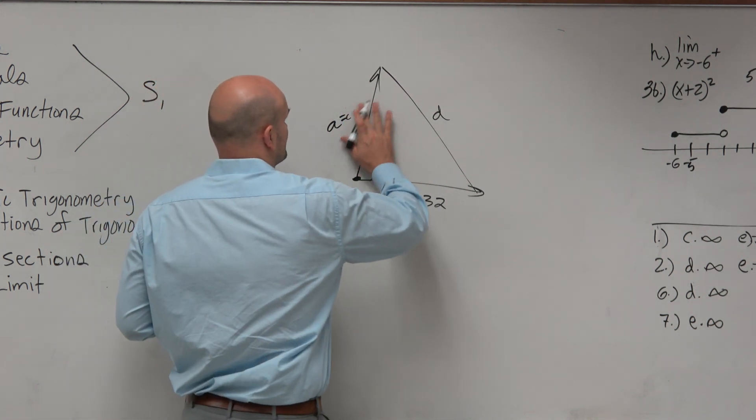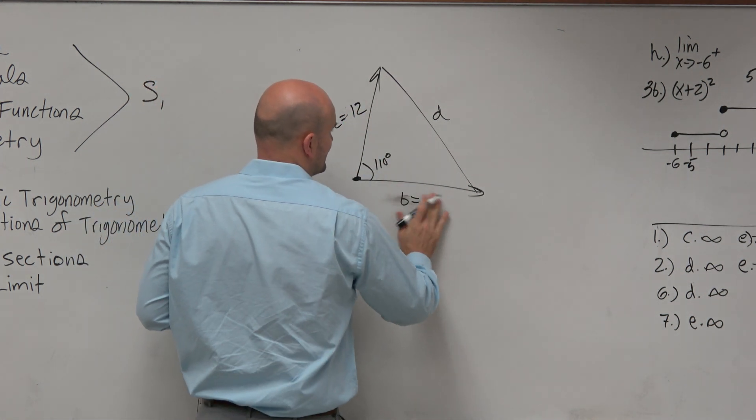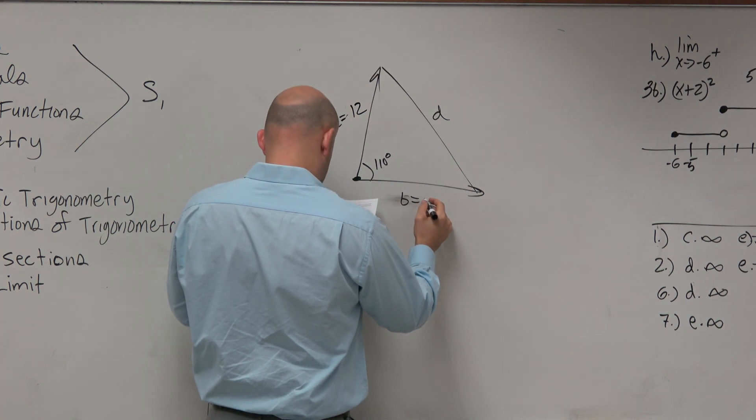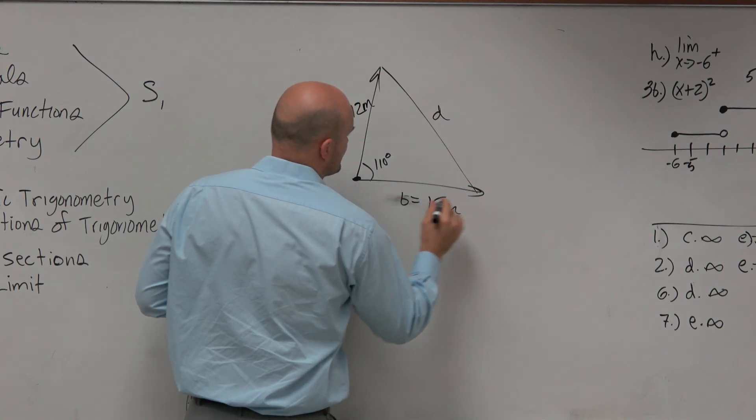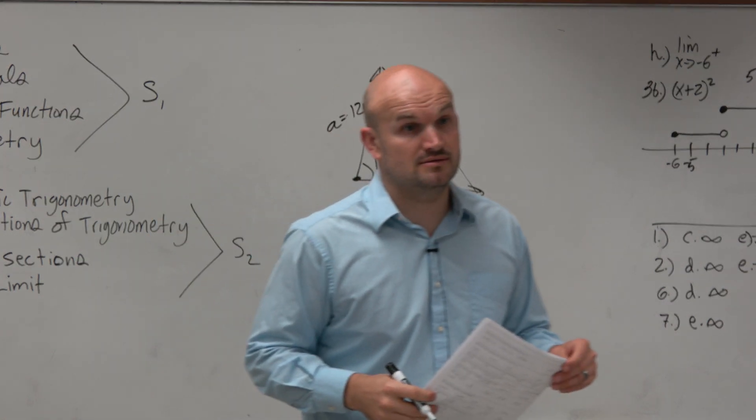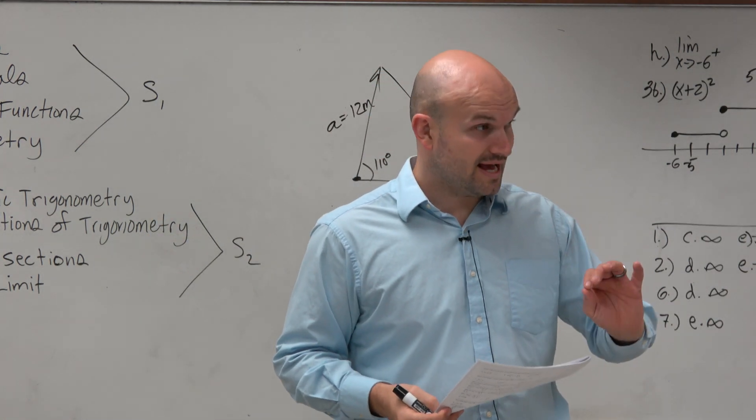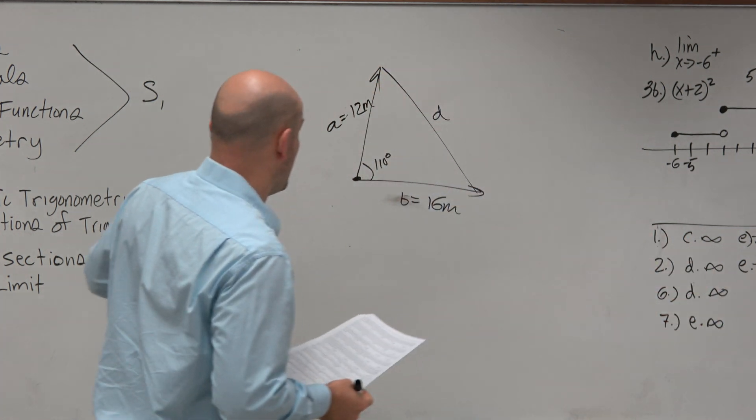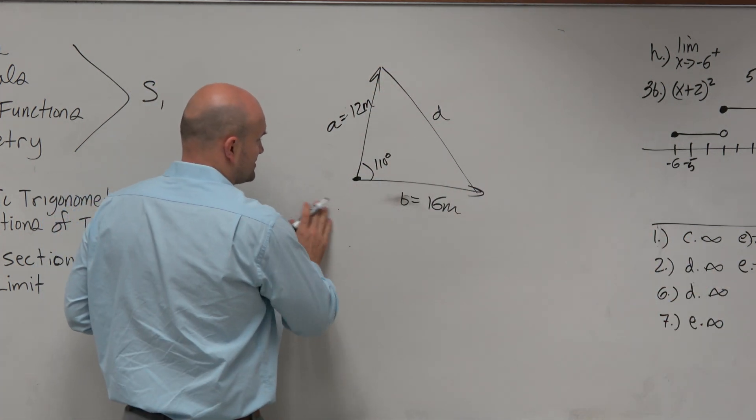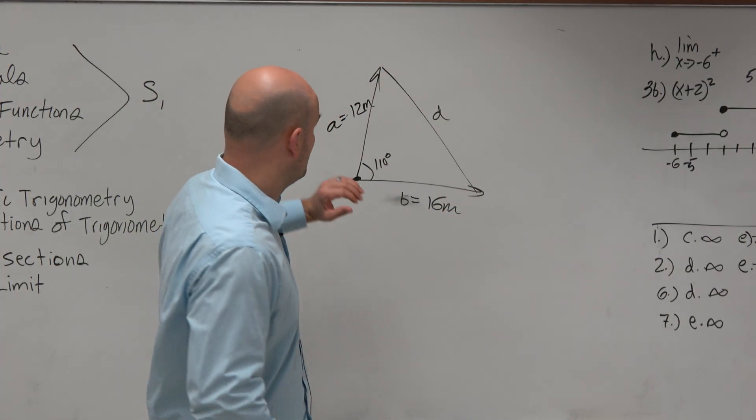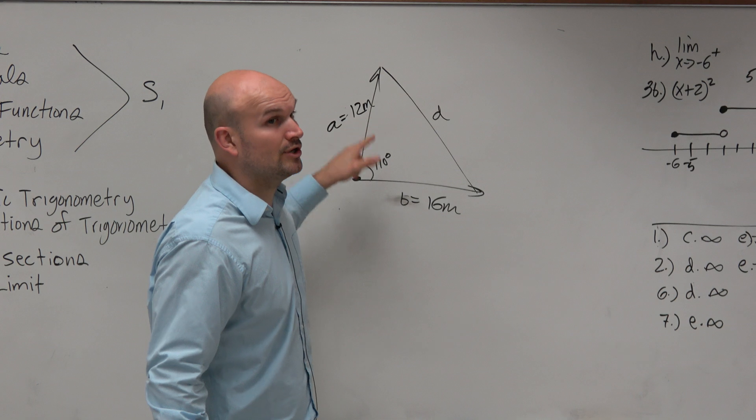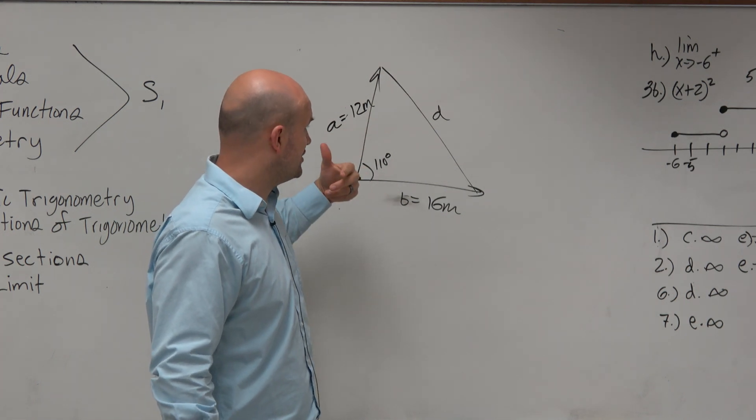If they only travel 30 minutes, which is half of an hour, that means they've actually traveled 16 miles and 12 miles. Then we recognize, what is it that we have? We actually have, what should we use? The law of sines or the law of cosines? Law of sines, you have to have a ratio of the side length and an angle. We only have one angle. So we've got to use the law of cosines.